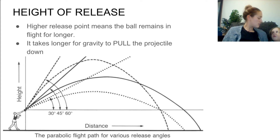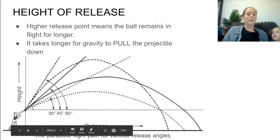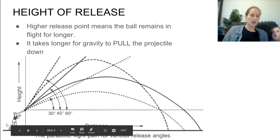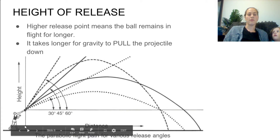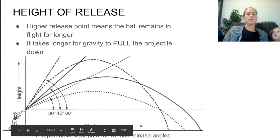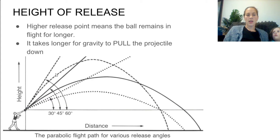Height of release is the height from the ground that the projectile is released from — the last point of contact. This man throwing a shot put: the height of release is the point it is released from his hand, that distance from the ground. So if he were to release the ball from say a meter higher...